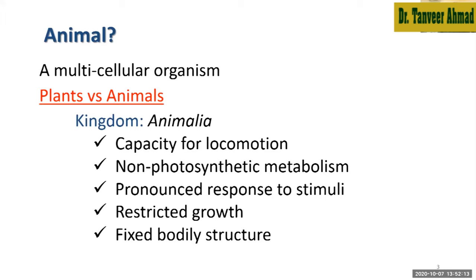The second characteristic is non-photosynthetic metabolism. Plants have photosynthetic metabolism — they are able to prepare their own food. But in the case of animals, they rely on plants or other sources.